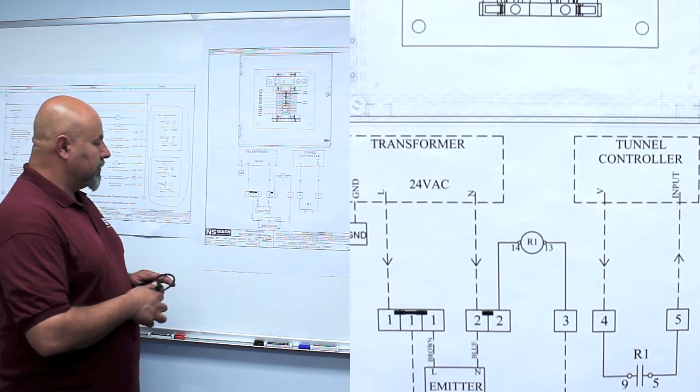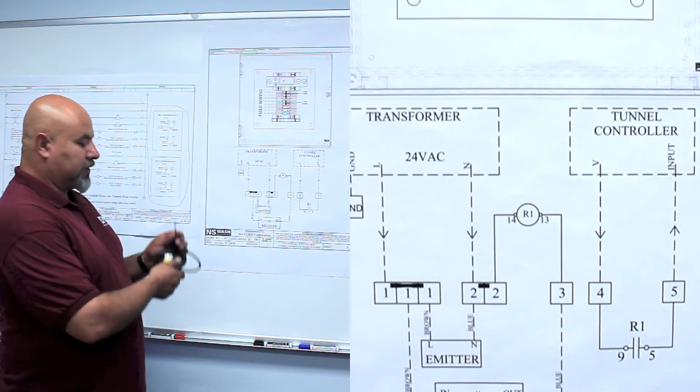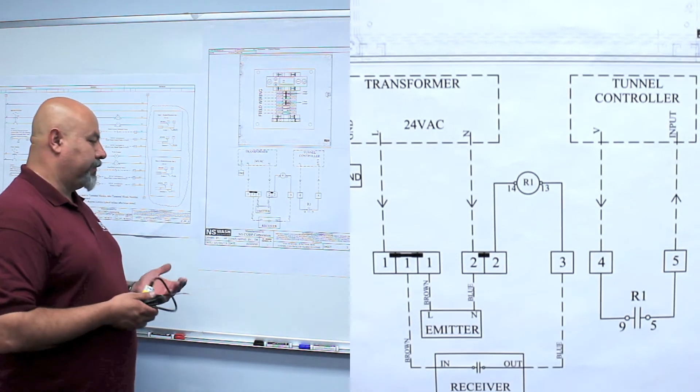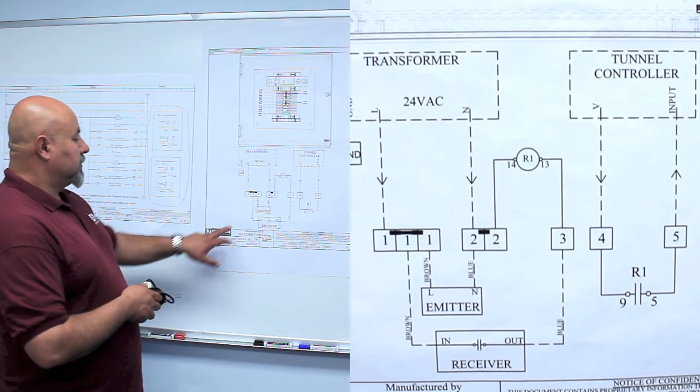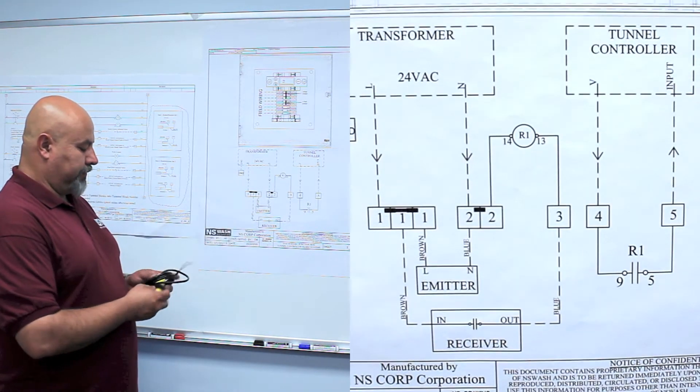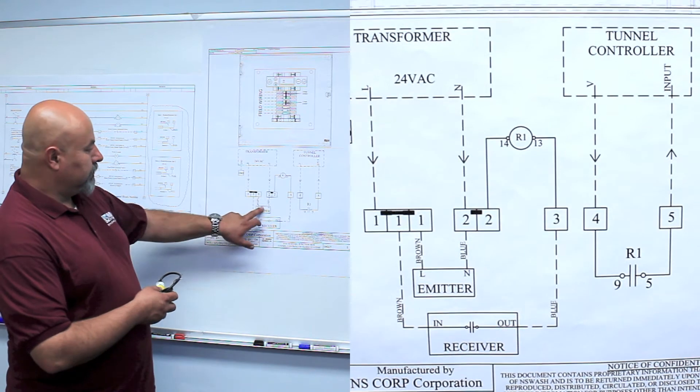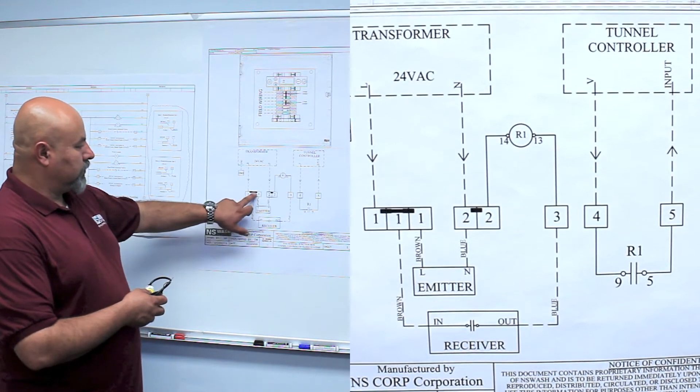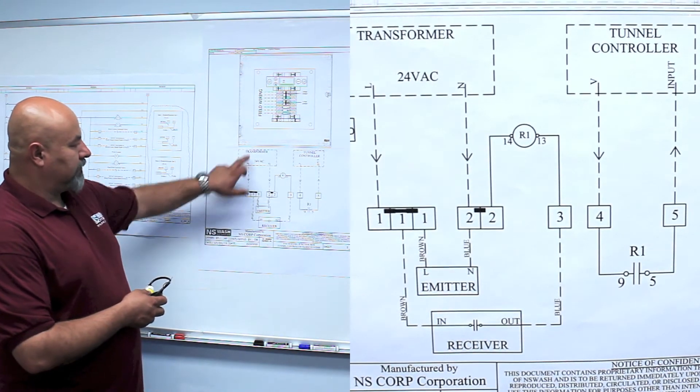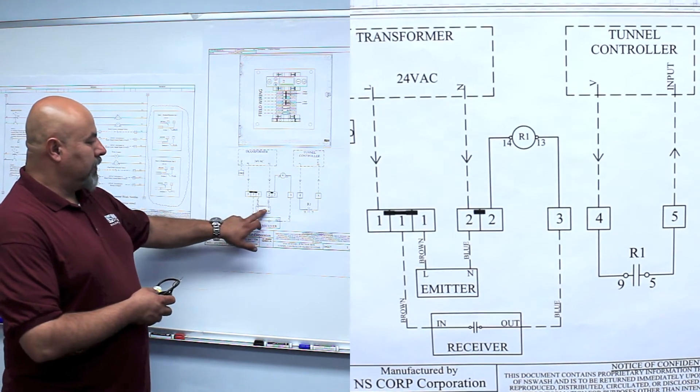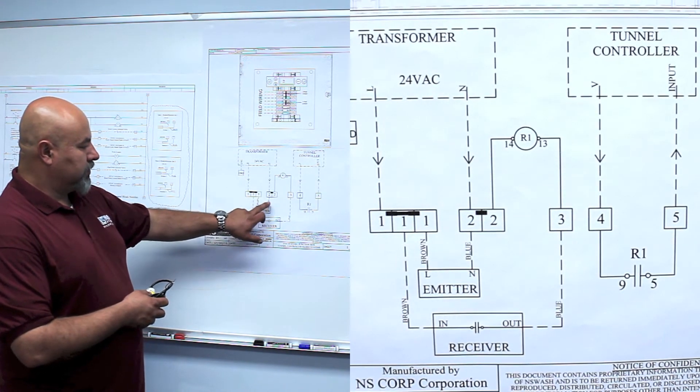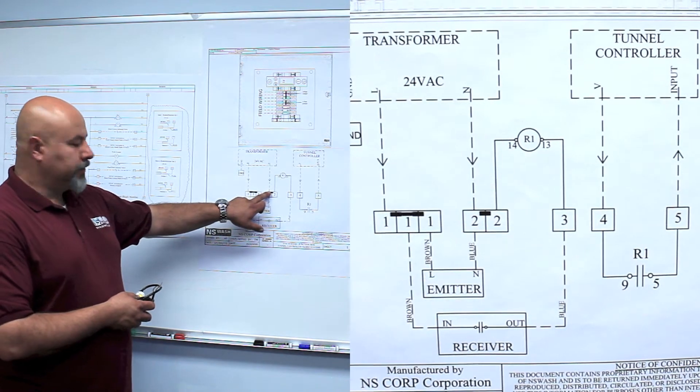The emitter itself has a brown and blue wire, but so does the receiver. So we have to correctly identify the emitter and take the brown wire to terminal one, which is our load side of the transformer. The neutral side of the emitter, which is the blue wire, goes to terminal number two.